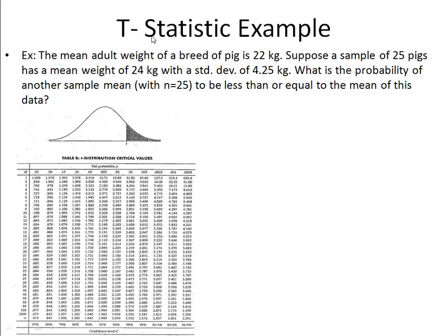So here we'll begin to actually go over an example of how to use t-distributions and t-statistics. And the example reads as follows. The mean adult weight of a breed of pig is 22 kilograms. Suppose a sample of 25 pigs has a mean weight of 24 kilograms with a standard deviation of 4.25 kilograms. What is the probability of another sample mean with n equal to 25 to be less than or equal to the mean of this data?